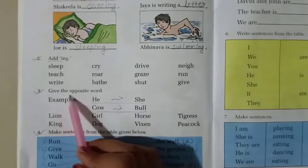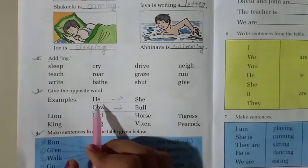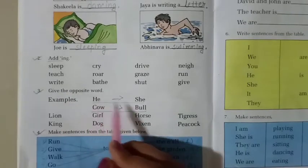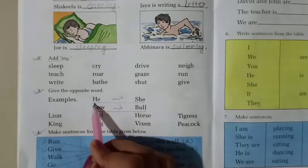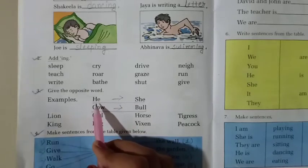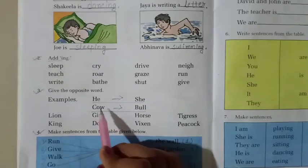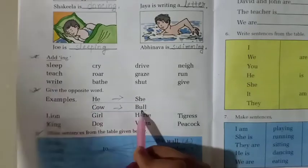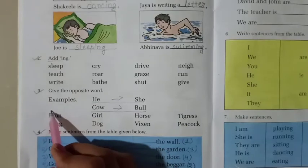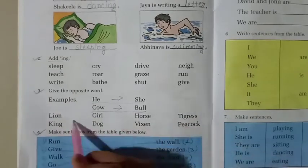Question number three. Give the opposite word. Students, look. There are some words. We have to write the opposite words of these words. See, these are done for us. Opposite word of he is she. Cow. Opposite word of cow is bull. So we have to write the opposite words of these words.